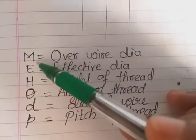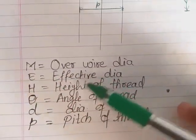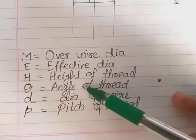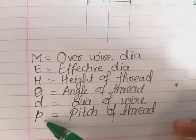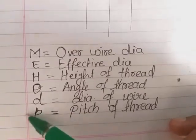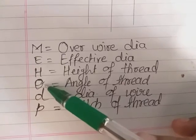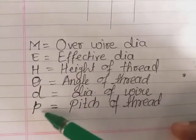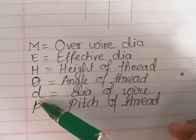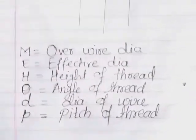The nomenclature we will be using: M is the over-wire diameter, E is the effective diameter, H is the height of thread, theta is the angle of thread, small d is the diameter of wire, and small p is the pitch of thread. In some books for the three-wire method, capital P may be used instead of small p, and x may be used instead of theta. Do not get confused — they represent the same quantities.